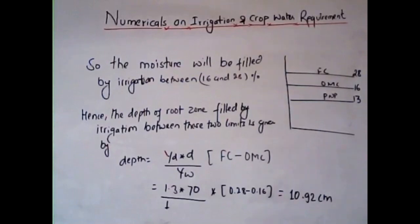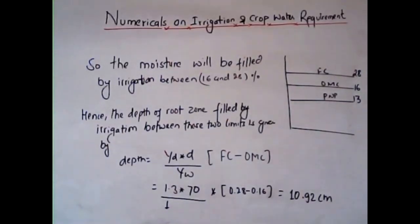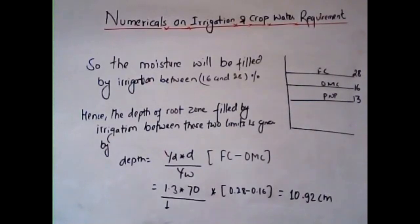Substituting the values: dry density (γd) = 1.3 g/cc, effective depth of root zone = 70 cm, field capacity = 0.28, optimum moisture content = 0.16. The γd and γw cancel out their gravitational components, leaving only the numerical density values. So: 1.3 × 70 × (0.28 − 0.16), which gives 10.92 cm as the depth of the root zone filled by irrigation water.